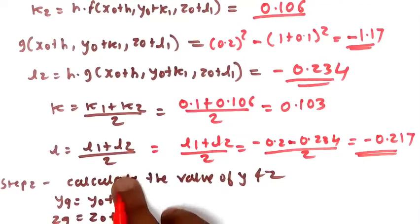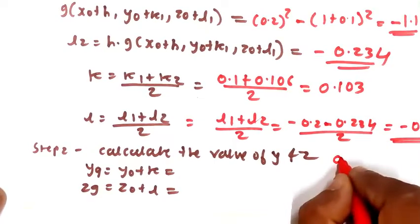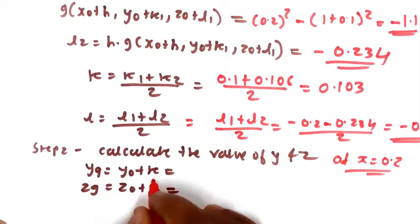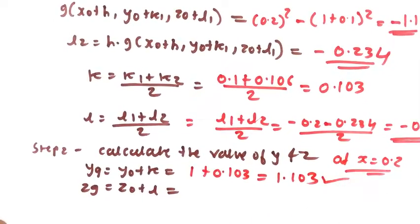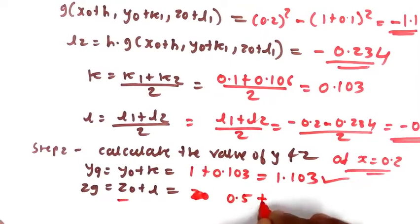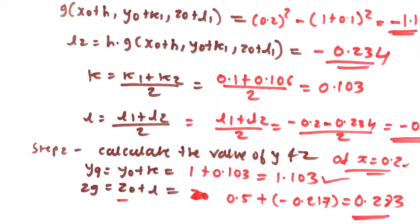Next, calculate y and z at x = 0.2. yg = y₀ + K = 1 + 0.103 = 1.103. Similarly, zg = z₀ + L = 0.5 + (-0.217) = 0.283. So the value of yg at x = 0.2 is 1.103 and zg is 0.283. I hope you understood this numerical. Thank you, thanks for watching.